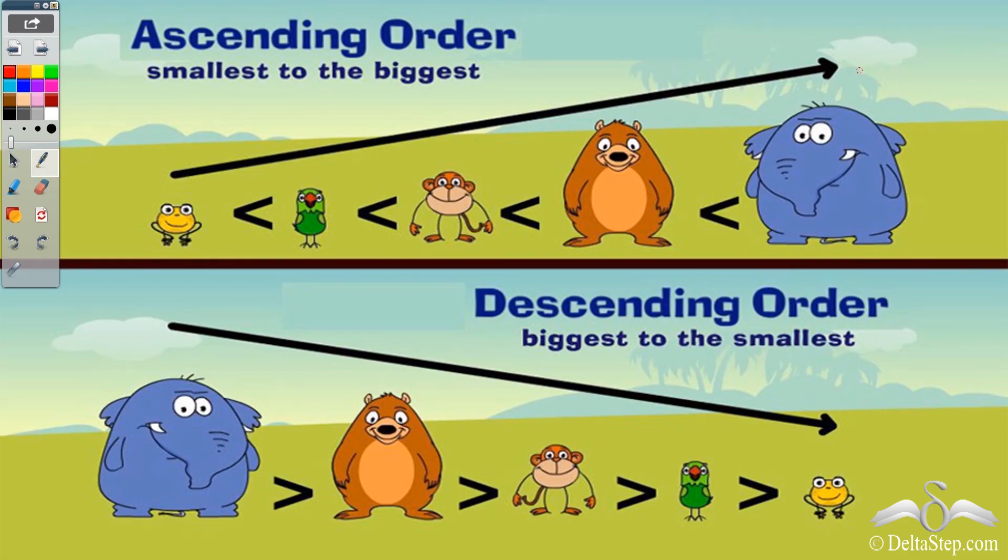We know what is ascending order and descending order. Ascending order means arranging from smallest to the biggest and descending order means arranging from biggest to the smallest.